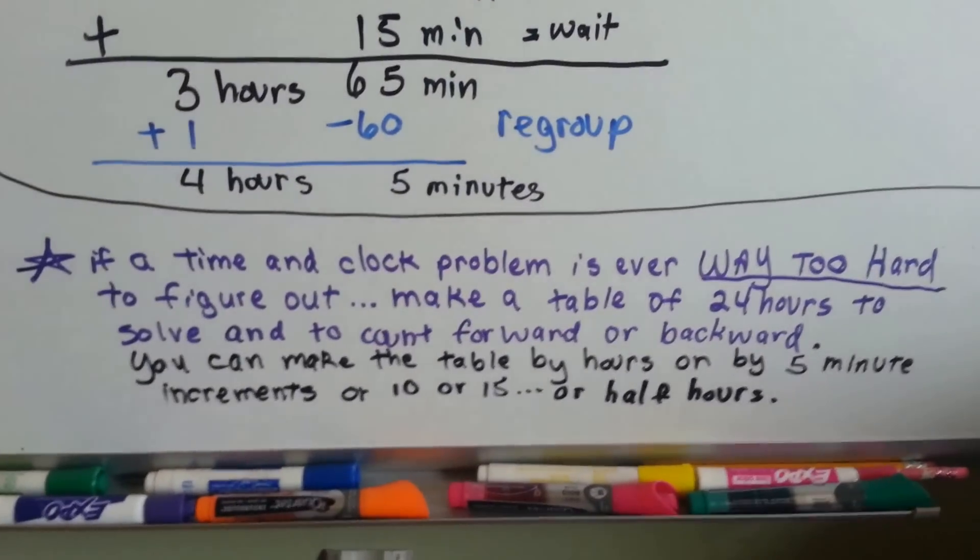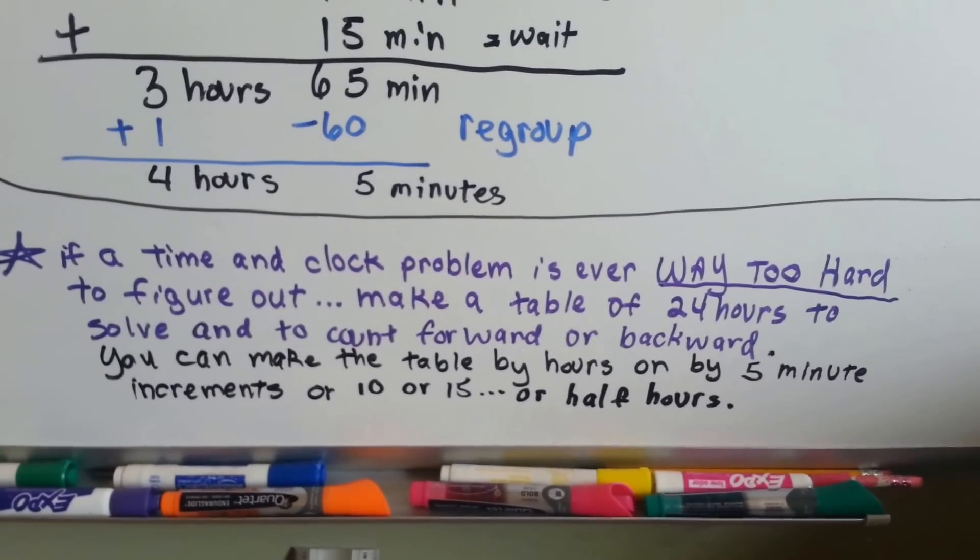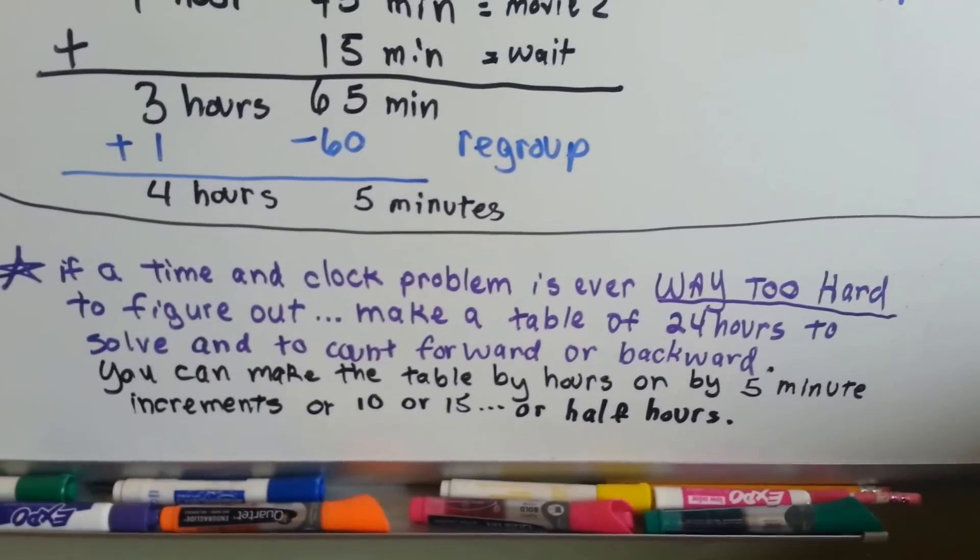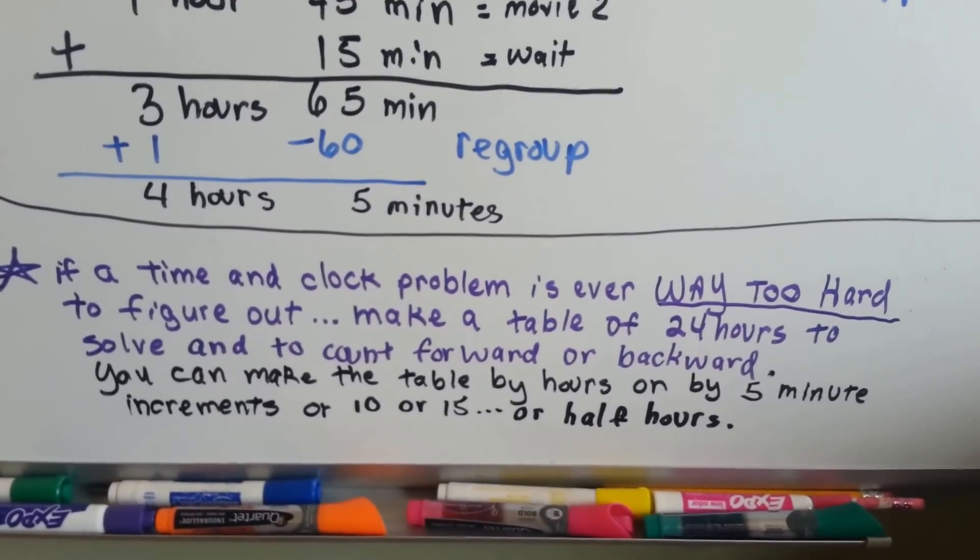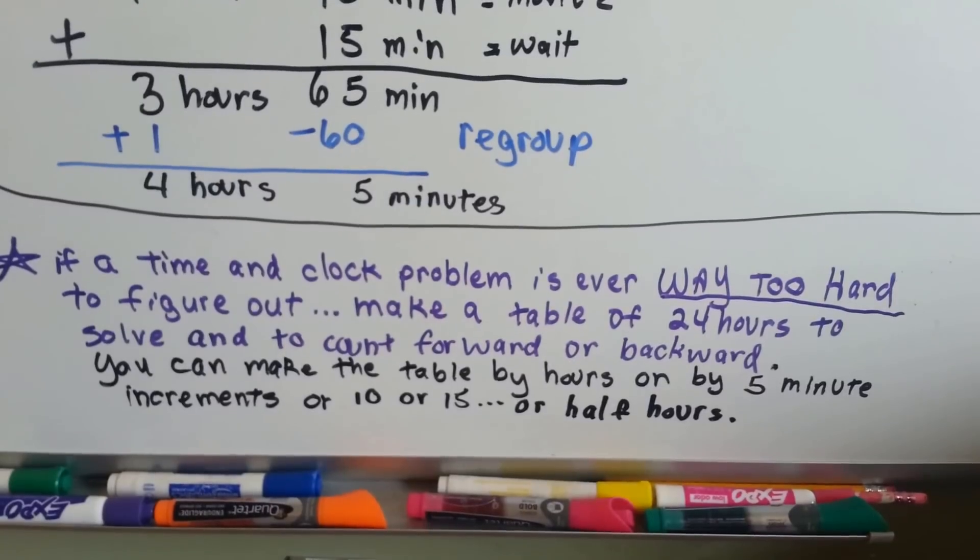Now, I want to let you know this. If a time and clock problem is ever way too hard to figure out, make a table of 24 hours. Don't make a clock. Make a table of 24 hours to solve it and count forward or backward as you need.